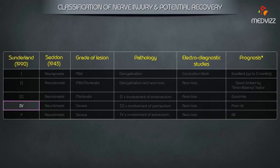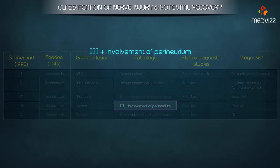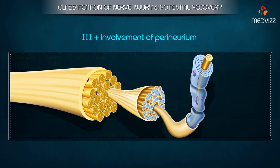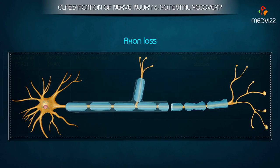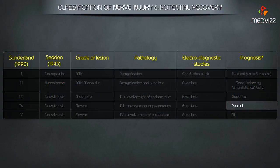Grade 4 of the Sunderland Classification corresponds to Neurotmesis of the Seddon Classification. The grade of lesion is severe. Pathology is Grade 3 plus involvement of the perineurium. Electrodiagnostic studies show axon loss. Prognosis is poor to nil.